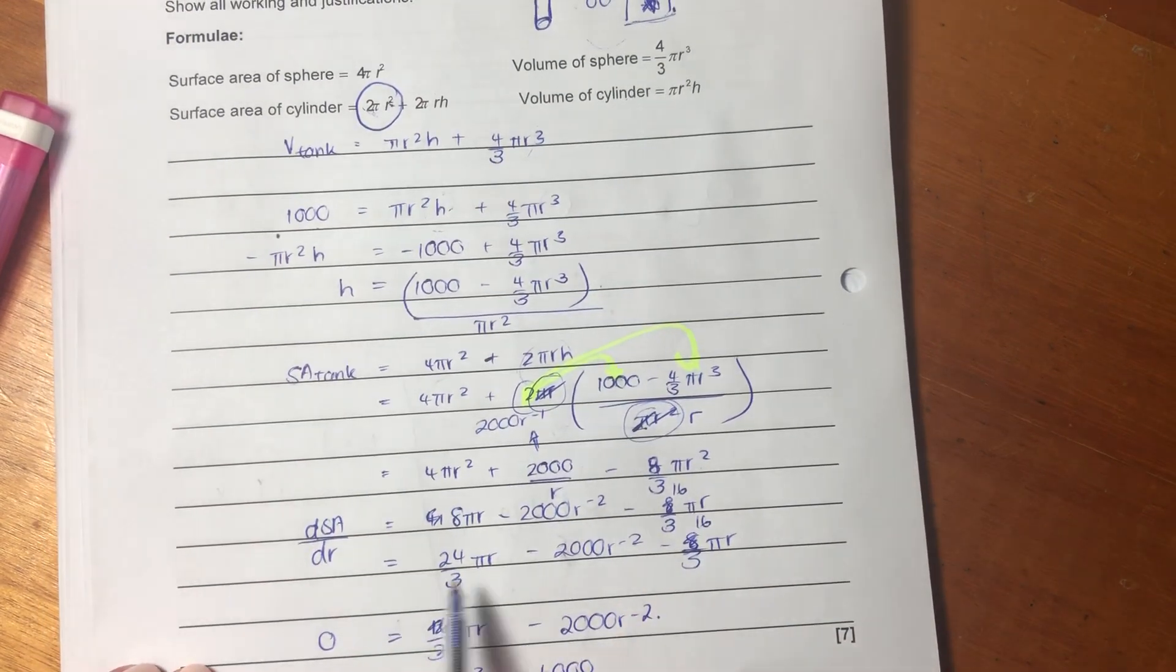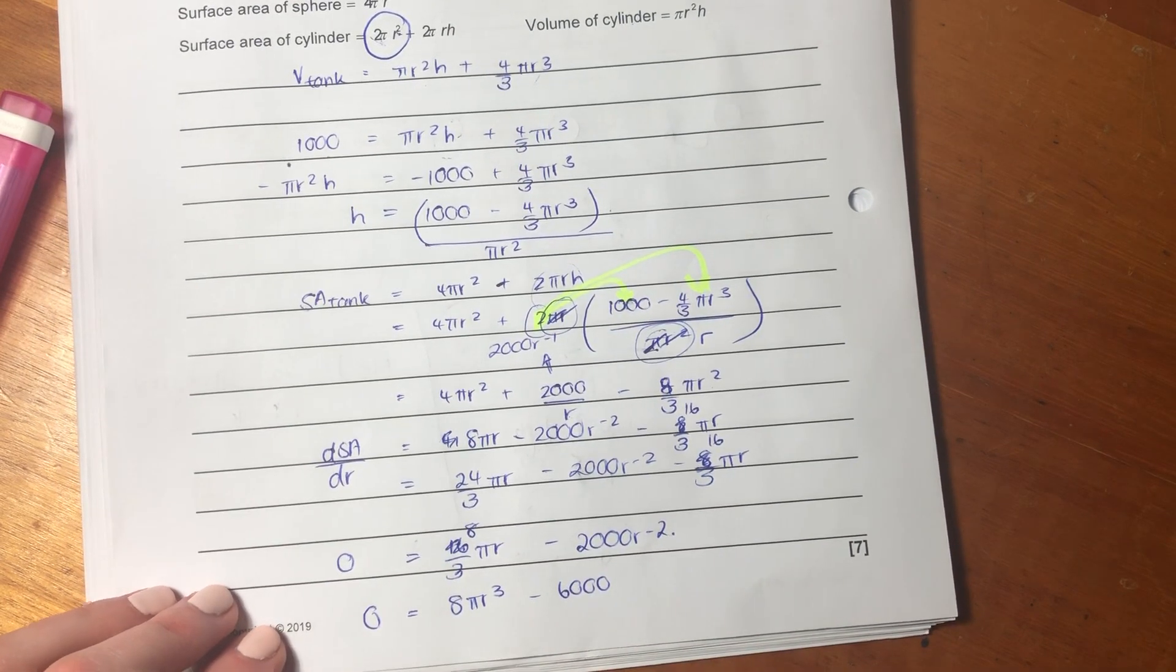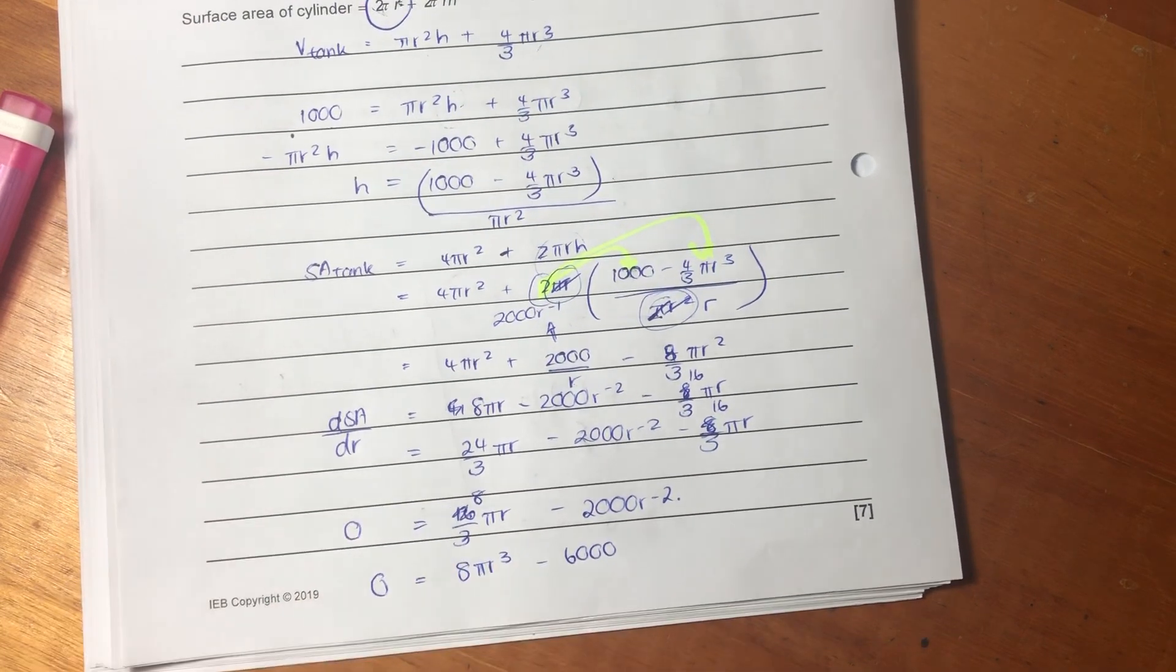I've cleaned it up a little bit. I've just cleaned it up, and then I said, okay, set it equal to zero. Set it equal to zero, because that's how we get the minimum.